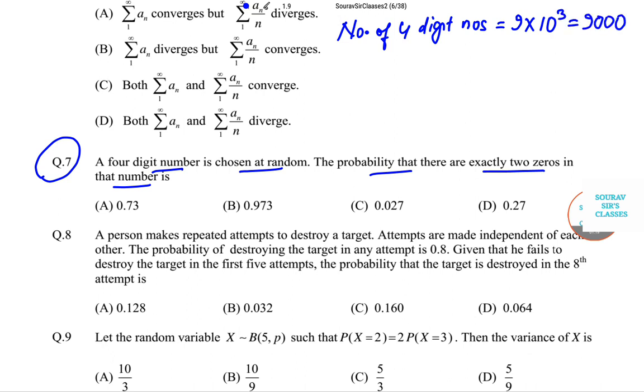Number of four-digit numbers is equal to 9 × 10³, and this is equal to 9000. Now number of four-digit numbers with exactly, it is mentioned exactly two zeros, so with exactly two zeros is equal to 9C1 × 3C2 × 1 × 9, and this will be 243.